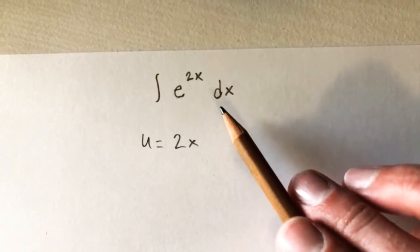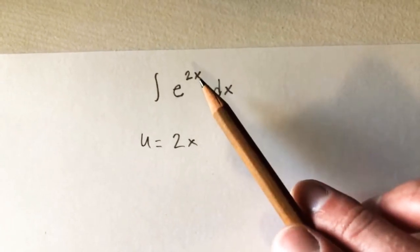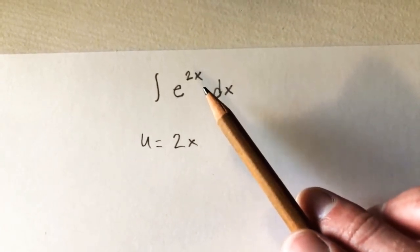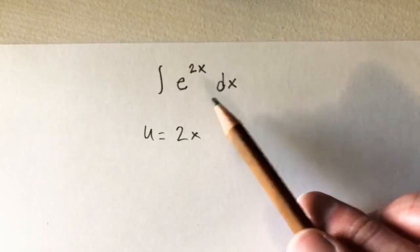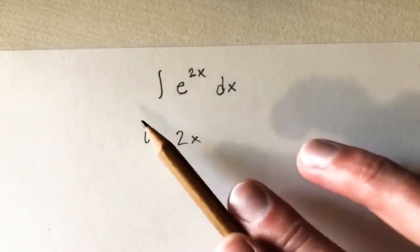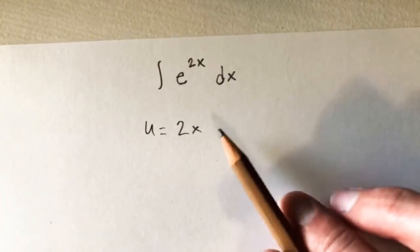whenever you're using u-substitution, if you pick some piece that the derivative of that piece is just a constant, it's going to be fairly easy to deal with that because we'll be able to just pull our constant out of the integral possibly. So let's go ahead and try that and see how it ends up working out.